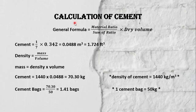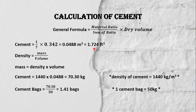Let's start the calculation of cement, sand, and water. Use this general formula: material ratio divided by the sum of ratios, multiplied by the dry volume. We take one part of cement divided by the sum of ratios (which is 7), multiplied by the dry volume. The volume of cement becomes 1.7 cubic feet, or 0.048 cubic meters.